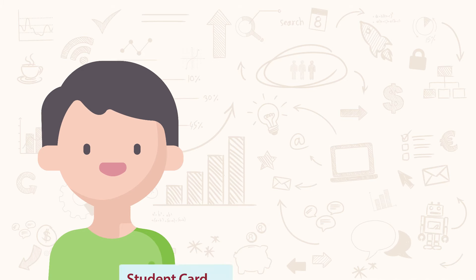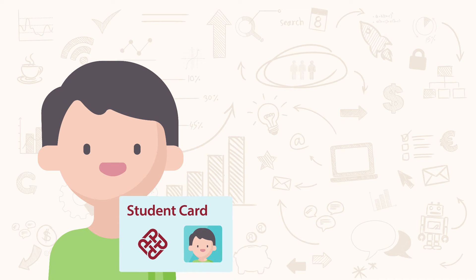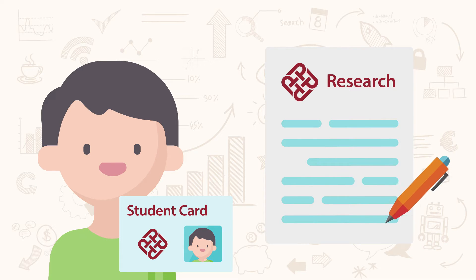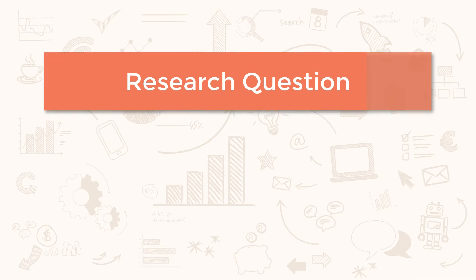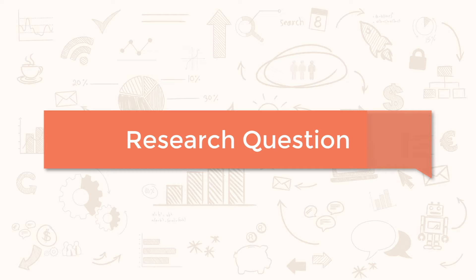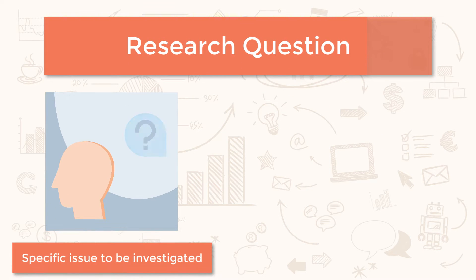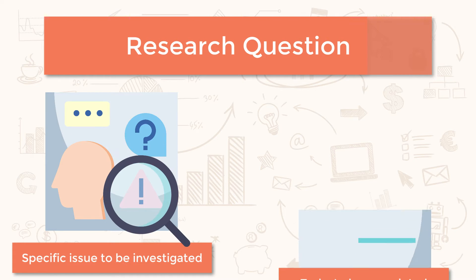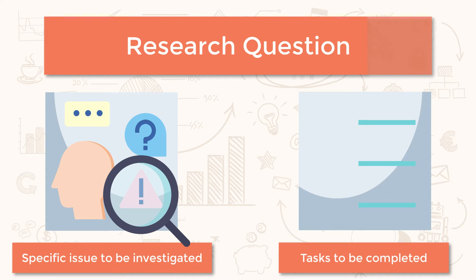As an undergraduate student in PolyU, you are expected to start doing research on some topics related to your study. It is likely that you will be required to develop your own research question too. The research question states the specific issue or problem that your assignment will investigate. It also outlines the task that you will need to complete.